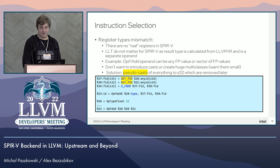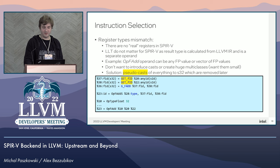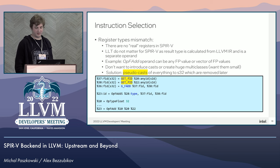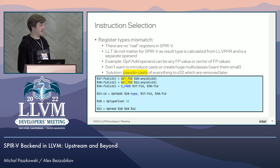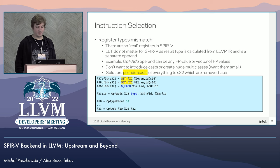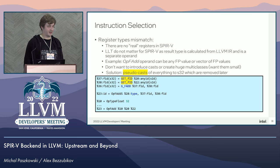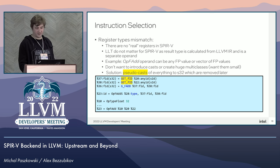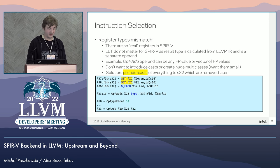One more side of the gap between SPIR-V and MIR is register representation. Since SPIR-V is a virtual ISA, it has an unlimited number of untyped registers, and every SPIR-V value is effectively a 32-bit integer ID. It has nothing to do with the result type field, which is calculated separately from the original LLVM IR. We didn't want to introduce any extra native casts because they would clash with existing ones, or create huge multi-class entries in TableGen to cover all possible type combinations. That's why we introduced pseudo casts which convert a register of any type into an S32 one, and being pseudo lets us painlessly remove them after selection.